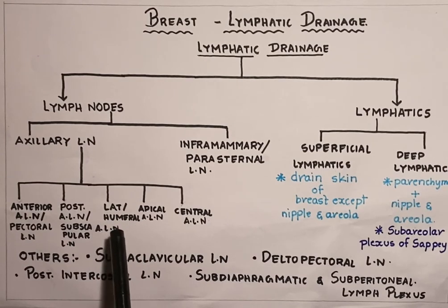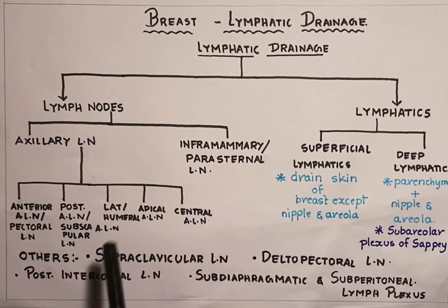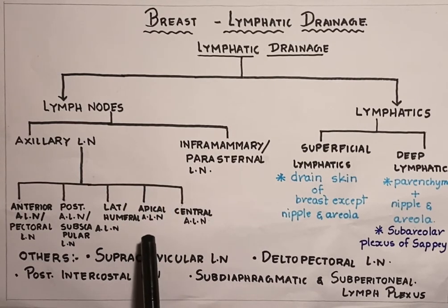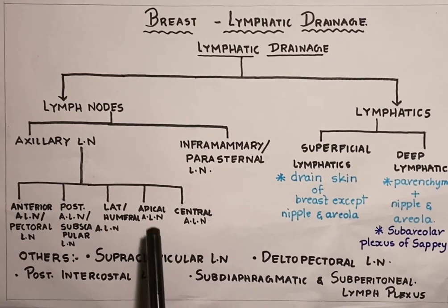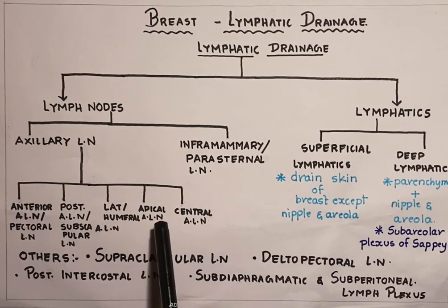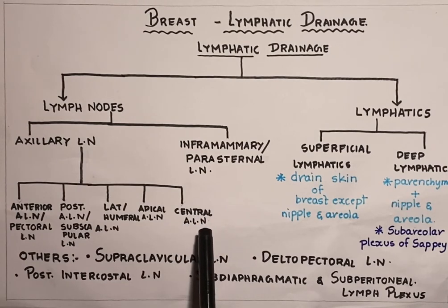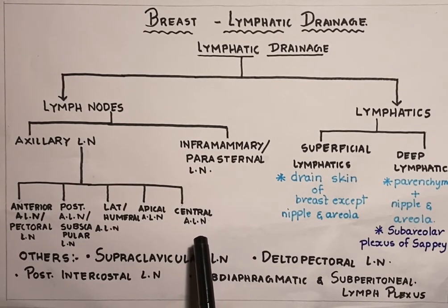The lateral or humeral group of lymph nodes are situated near the lateral wall of the axilla, or near the humerus. The apical group of axillary lymph nodes are situated near the apex of the axilla. The central group of axillary lymph nodes are situated near the base of the axilla.